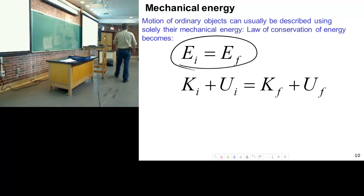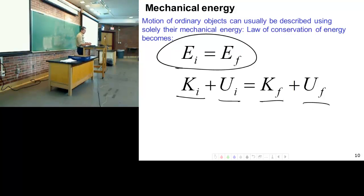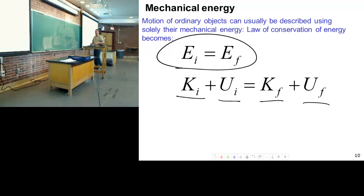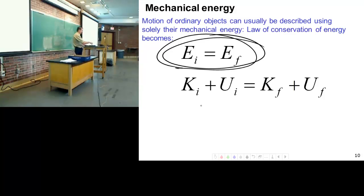Energy initial equals energy final — that's what the law of conservation of energy tells me. I have to look at the problem and decide what is my initial kinetic energy, my initial potential energy, my final kinetic energy, and my final potential energy. Sometimes some of these may be zero and others may not be zero.